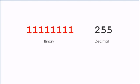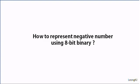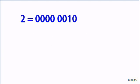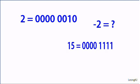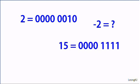255 is the maximum number that can be represented by an 8-bit unsigned binary. How do we represent negative numbers using 8-bit binary? For example, 2 is represented by 00000010 — but what about negative 2? 15 is represented by 00001111 — what about negative 15?